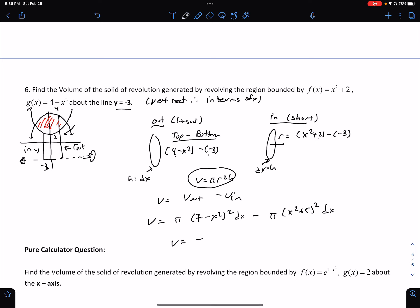Write this as a single integral, π. You're going to write out your integral. We get (7 - x²)² - (x² + 5)² dx. Remember, I just factored that it's a common π and dx. That's all we did.